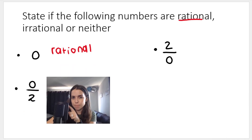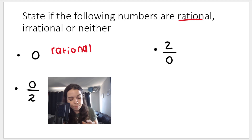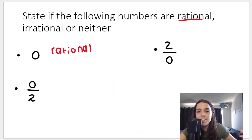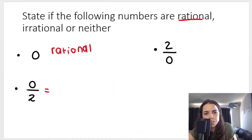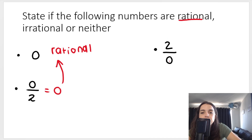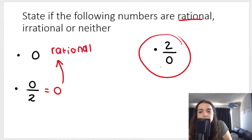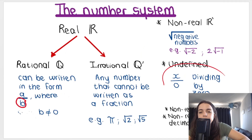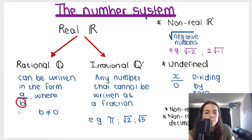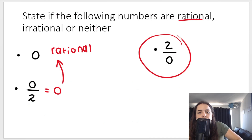Then we've got zero divided by two. If you take your calculator and type in zero divided by two, you can have zero as the numerator — it is allowed. Zero divided by two is just zero, so it's the same as the previous question — it's rational. But two divided by zero cannot work. If you try to divide by zero on your calculator, it gives you math error. Dividing by zero gives a number we call undefined, so the answer is neither because it's undefined.